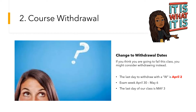If you think you're going to fail this class, you might consider withdrawing instead. The last day to withdraw with a W is April 2nd. Our exam week is April 30th to May 6th, and the last day of our class is May 3rd. Take an honest appraisal of where you stand — if you think there's a chance you'll fail or can't put forth the required effort, you probably want to consider withdrawing.